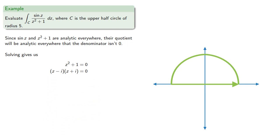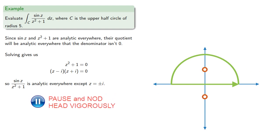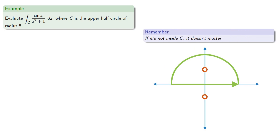So sine z over z² + 1 is analytic everywhere except z = ±i. So again remember if it's not inside our closed path, it doesn't matter. While sine z over z² + 1 is analytic everywhere except z = ±i, only z = i is inside our closed path.